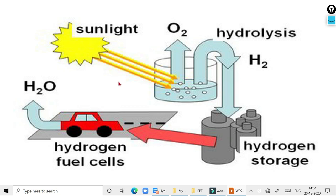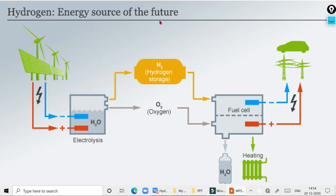Hydrogen as an energy source of the future: using solar panels, H₂O is electrolyzed to give hydrogen and oxygen. These are used together in fuel cells, whose product is water. That water can be reused, and the process can produce electricity for electric vehicles. This is hydrogen energy — the energy source of the future.